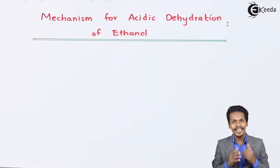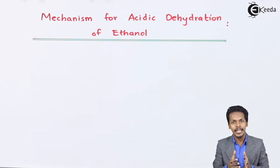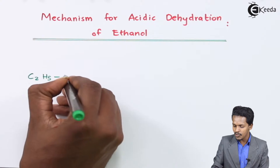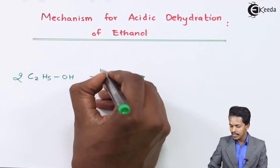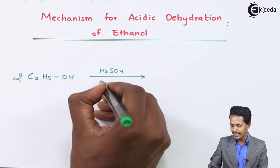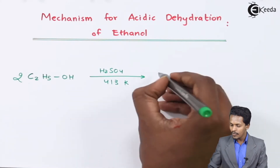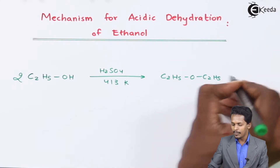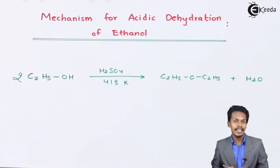In this topic we're going to talk about the mechanism for the acidic dehydration of ethanol. Let me explain the general reaction first. The general reaction for the dehydration of ethanol is: two moles of C2H5OH reacted with sulfuric acid at 413 Kelvin gives the product C2H5-O-C2H5, with byproduct H2O. The product obtained is diethyl ether.